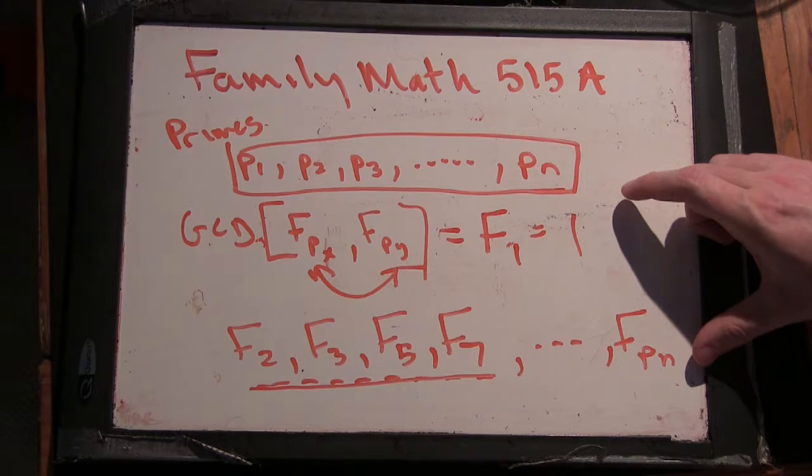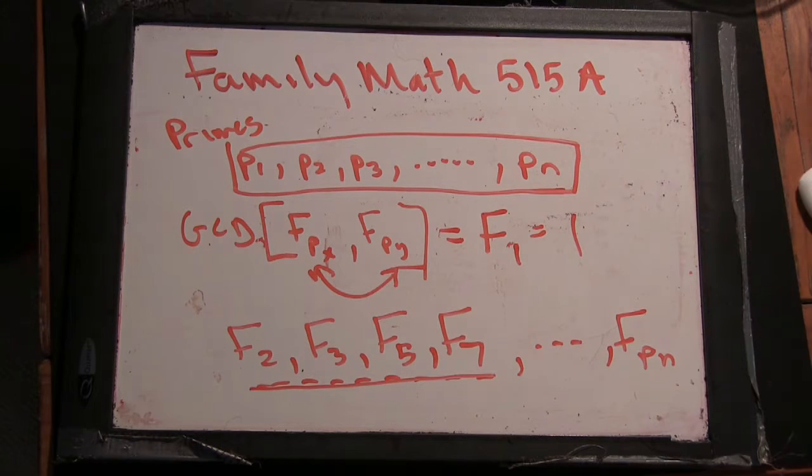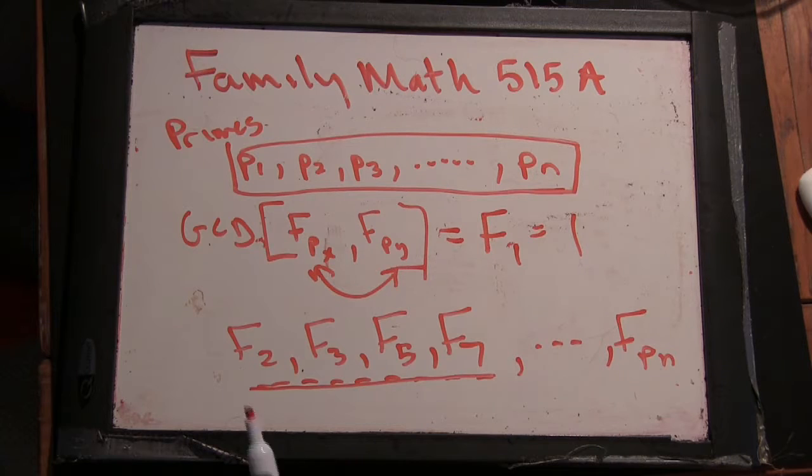And as long as there's more primes, and there's infinitely many Fibonacci numbers, there will be more and more primes. Now, how is it going to happen that there are more primes in this list?